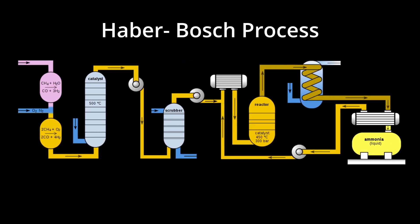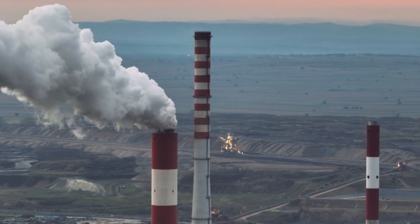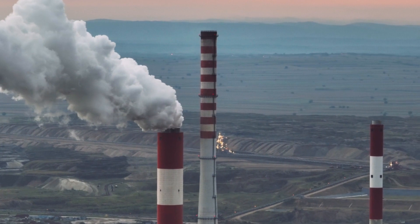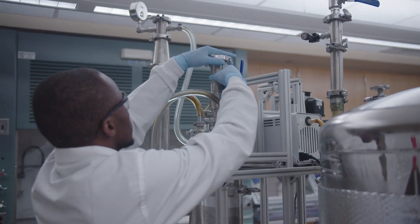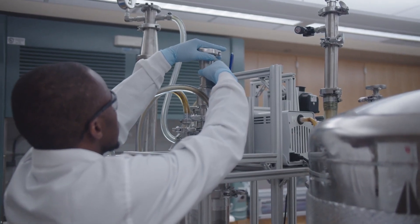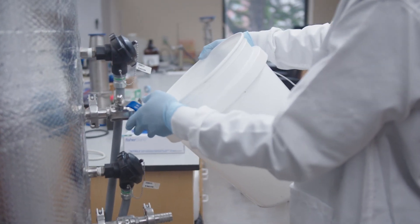Our technology is to remove the ammonia out of water, capture it, and make it into a fertilizer. Traditionally, ammonia fertilizer is produced by the Haber-Bosch process. It's very costly and releases greenhouse gases during that process. Our process is almost a zero-carbon process.